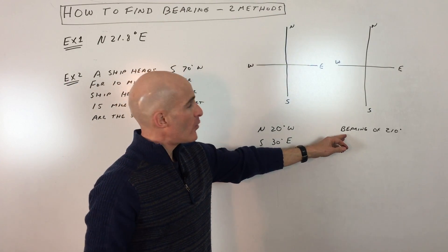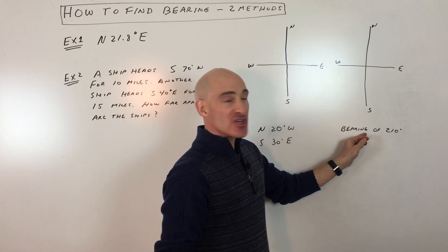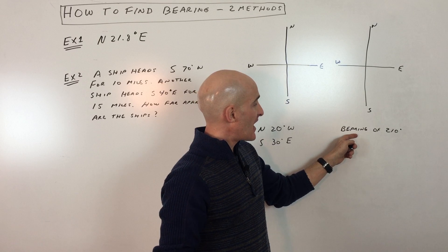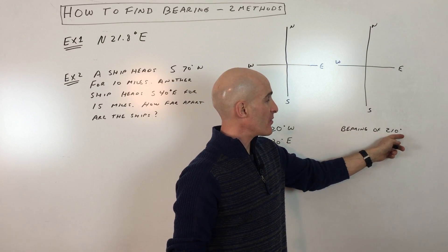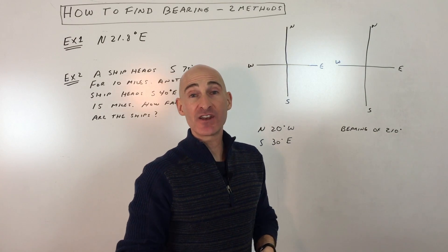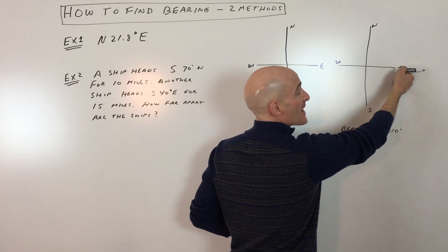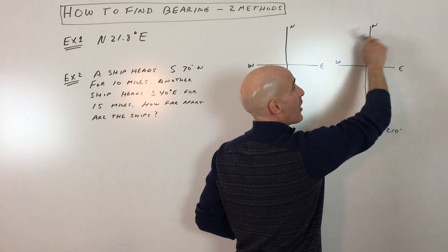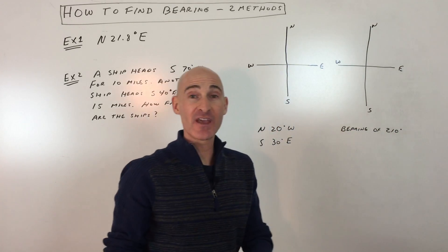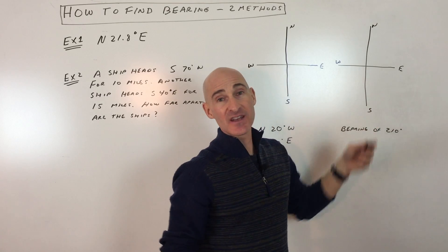There's two different ways, like I said. One way is they'll just say a ship or an airplane or an object is heading at a bearing or with a bearing of, let's say, 210 degrees. Now, we're used to measuring angles in such a way that we start off facing the positive x direction and we head counterclockwise if it's a positive angle and then clockwise if it's a negative angle.